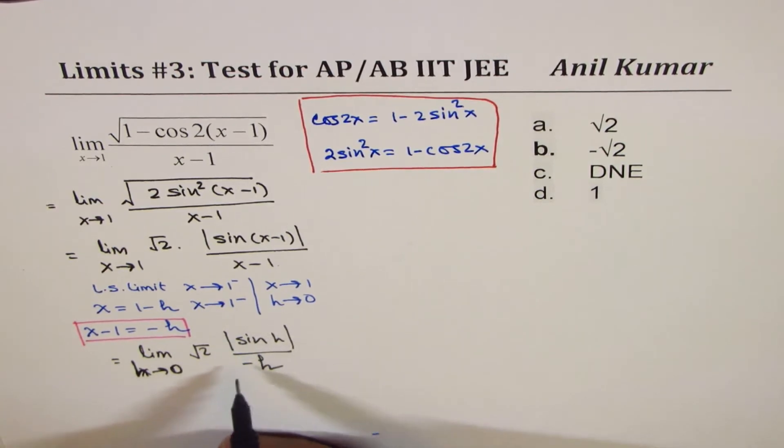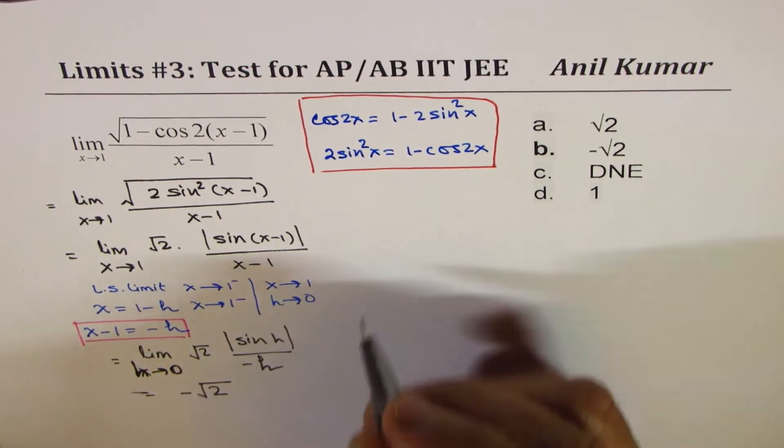Now, that limit is 1. So minus gives me result as minus square root 2. We get minus square root 2.